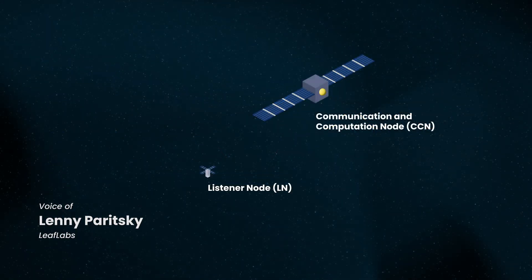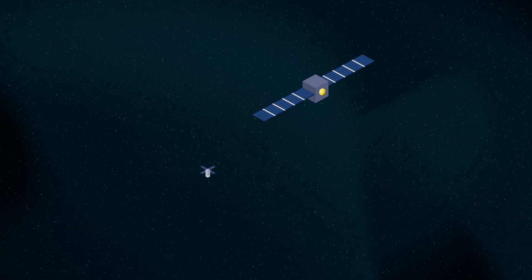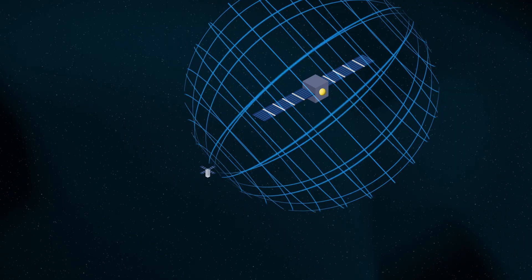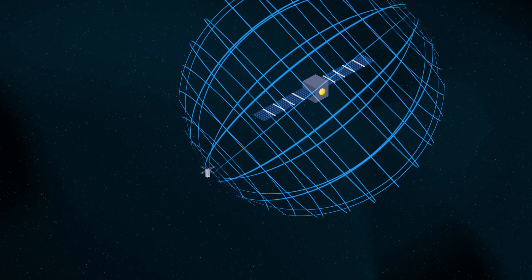The CCNs get their positions in space via cooperative two-way ranging plus tracking information from the Earth. Then the CCNs broadcast GPS-like signals so that the listener nodes can measure their own positions relative to the CCN network.